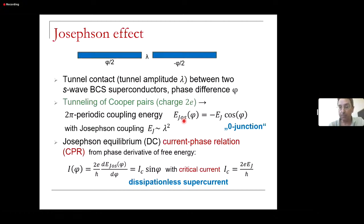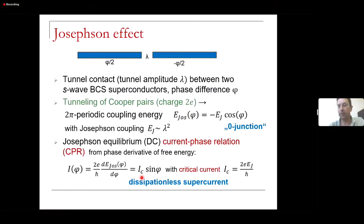Even in equilibrium, a current can flow in such a device. You get this current by taking a derivative of the free energy — a phase derivative multiplied with the charge of the Cooper pair divided by h-bar. This gives the famous Josephson relation: the current-phase relation is given by a critical current times sine of phi, where the critical current is determined by the Josephson coupling. That's textbook material.